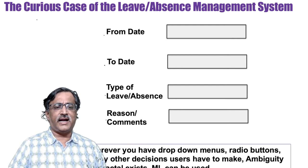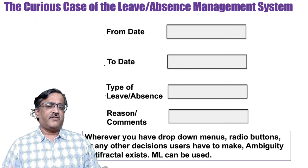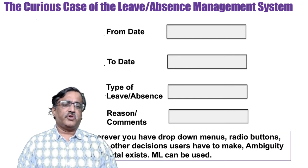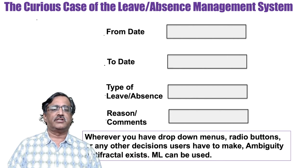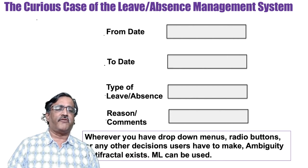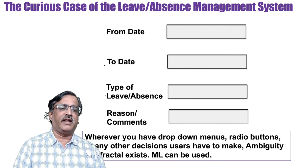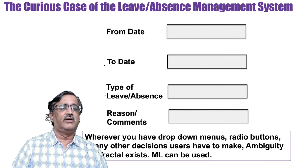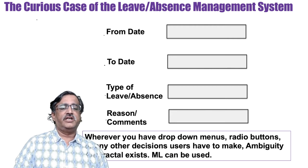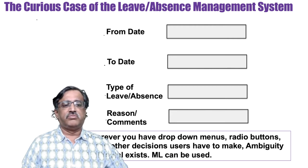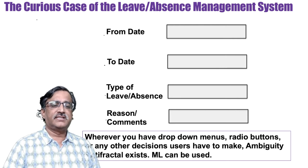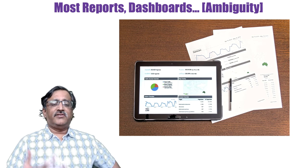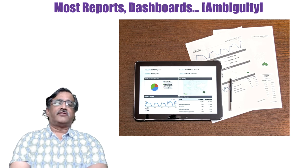With the result that, in the case of IT systems, all drop-down menus, radio buttons, or any other decisions the users have to make — the ambiguity anti-fractal exists, and it could be a machine learning opportunity to transform that area, assuming the business case can be built. I think this is probably the biggest opportunity.